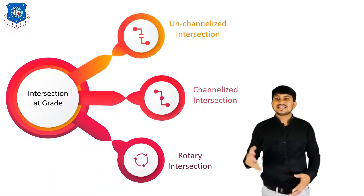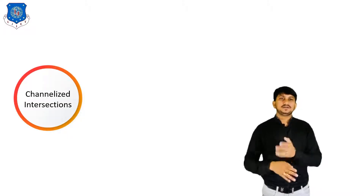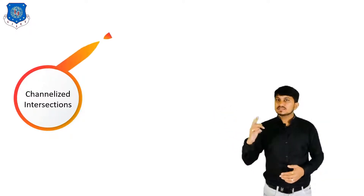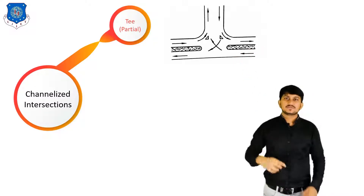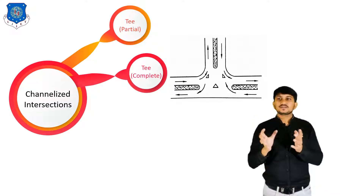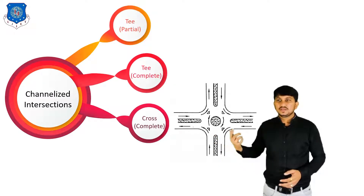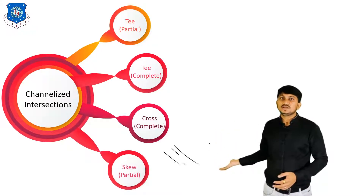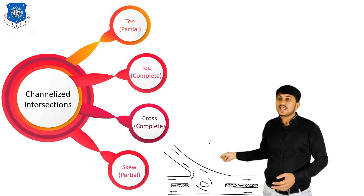Now let's move to the second type of intersection at grade which is channelized intersection. In this type, traffic islands or dividers are provided to channelize and regulate the traffic flow. Examples include T-partial channelization where dividers are provided only on main roads and not on minor roads, T-complete channelization where all connecting roads have islands or dividers, cross-complete channelization where all roads have dividers or islands, and skewed-partial channelization where the inclined or minor connecting road does not have dividers or islands.